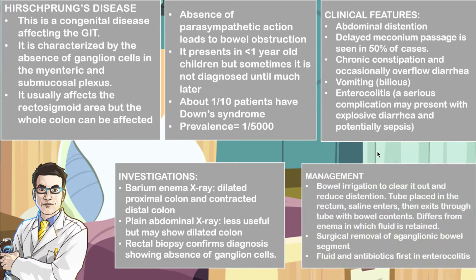In the management of the condition, before you surgically resect the bowel, you want to perform bowel irrigation to clear it out and reduce the distension. You place a tube in the rectum, flush in some normal saline, and this exits through the same tube together with the bowel contents. Remember that this is different from an enema, because with an enema the fluid is retained in the gut. After this is done, you perform surgical removal of the aganglionic bowel segment.